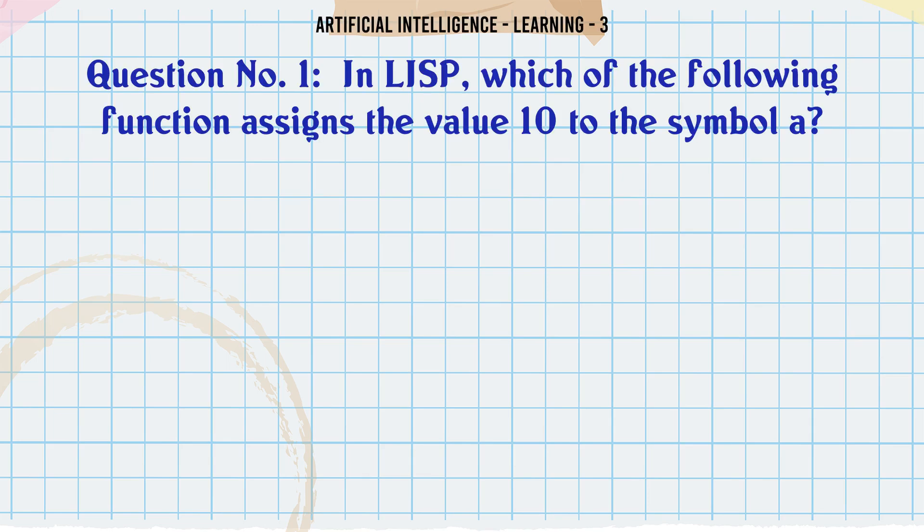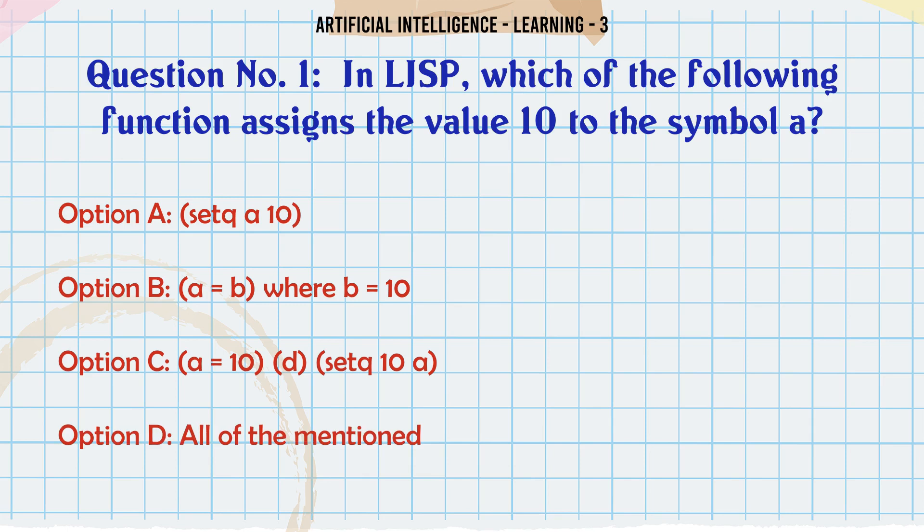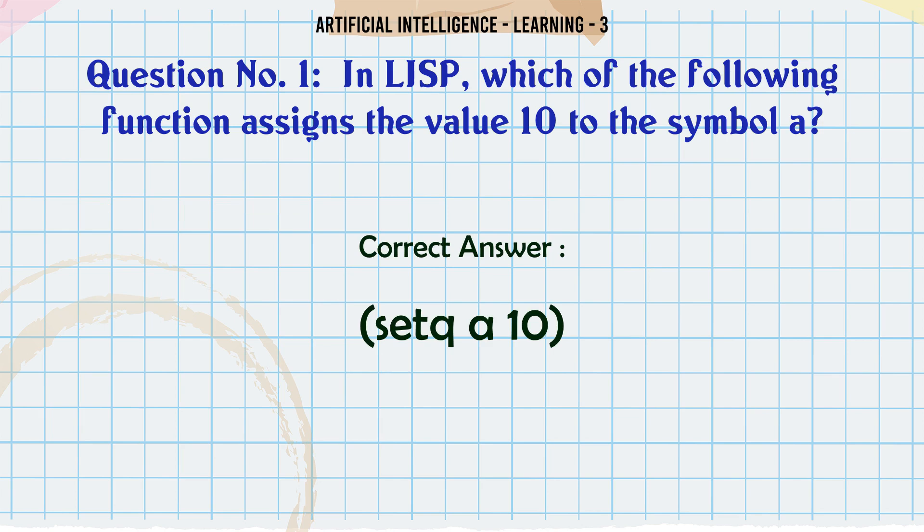In LISP, which of the following function assigns the value 10 to the symbol a? Option A: setq a 10. Option B: a = b where b = 10. Option C: a = 10. Option D: setq 10 a. Option E: all of the mentioned. The correct answer is setq a 10.